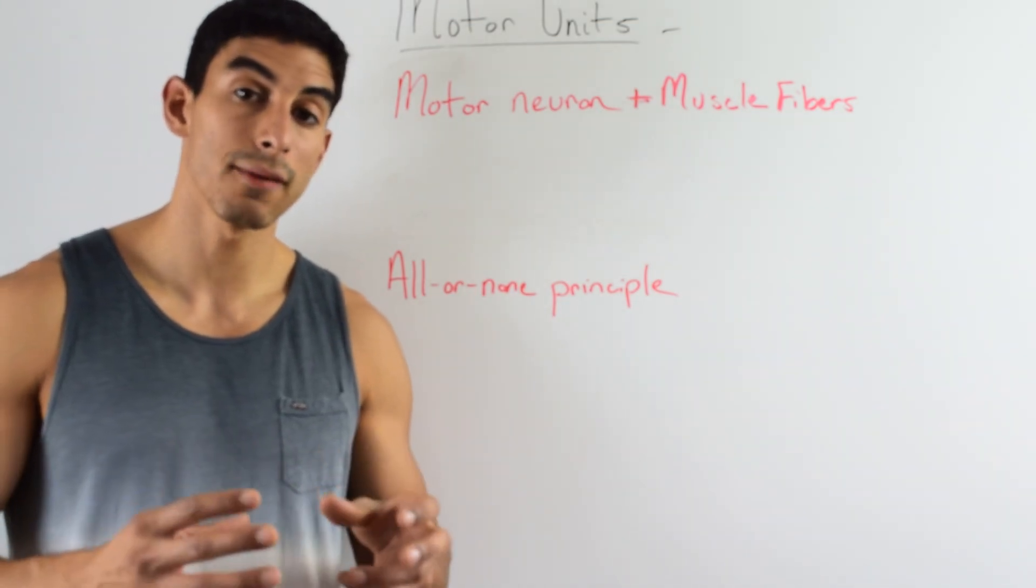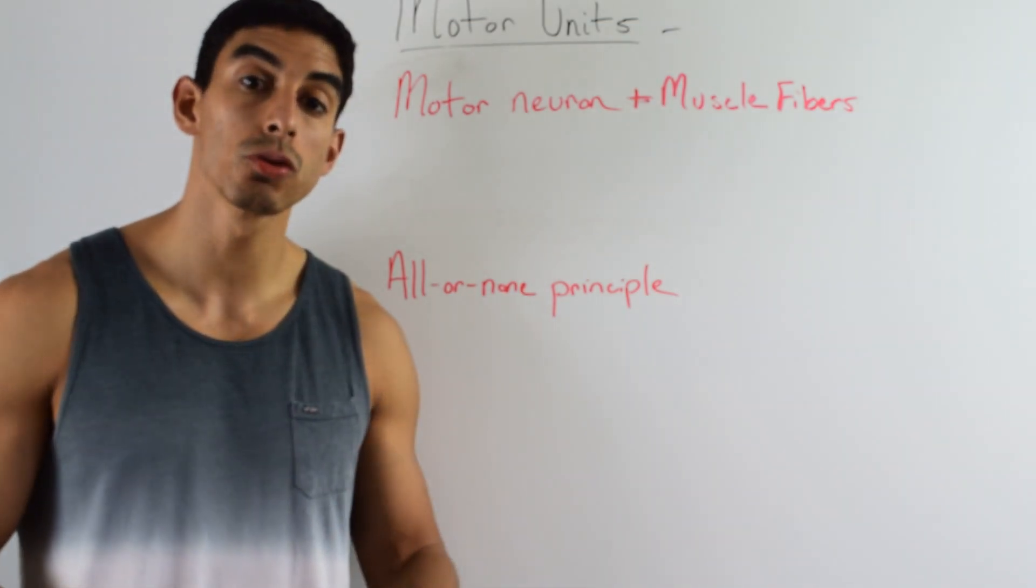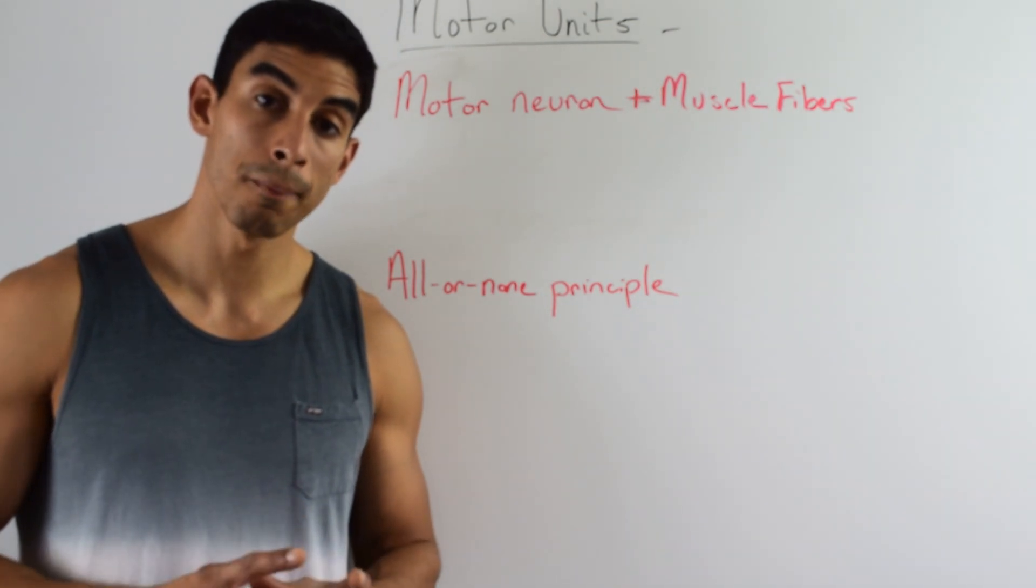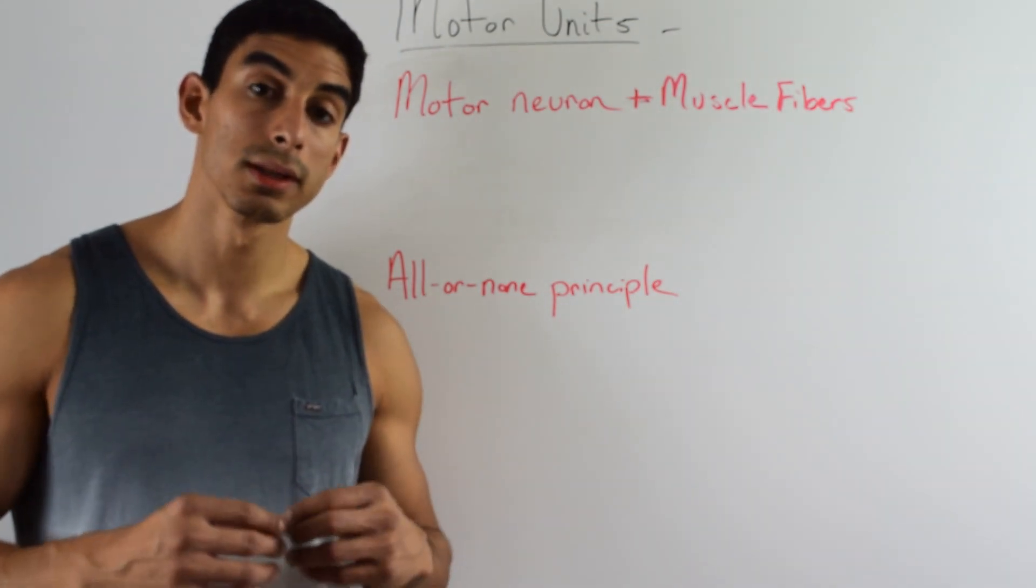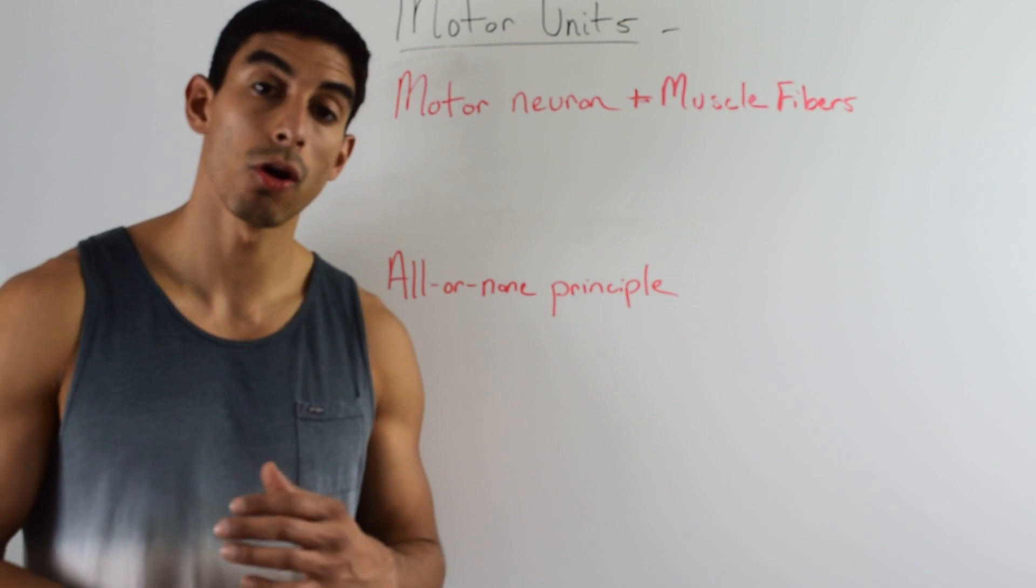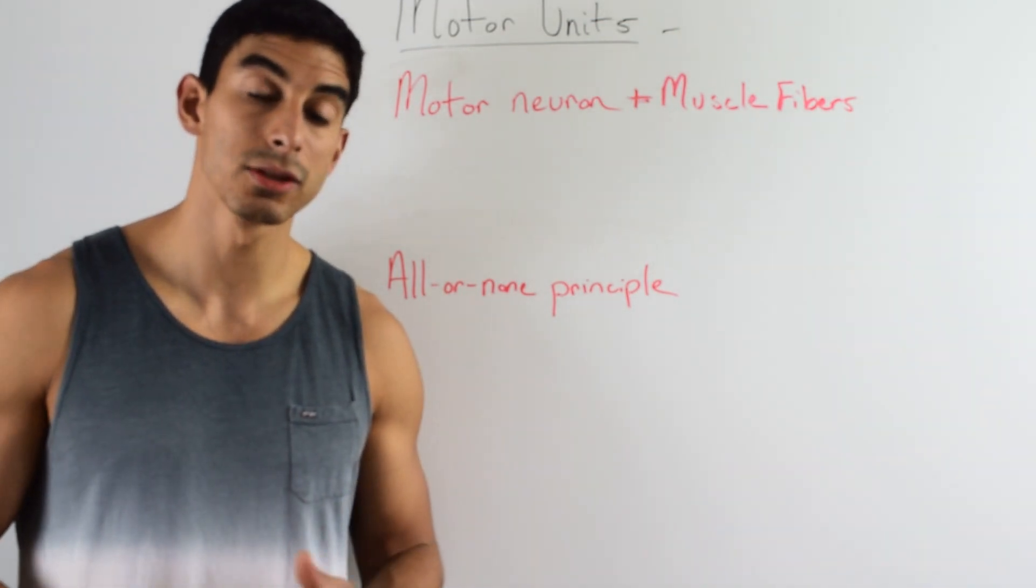When the signal is sent from the brain through the nerve cells to the motor neuron, the motor neuron signals all of the muscle fibers that it innervates to contract at one time.